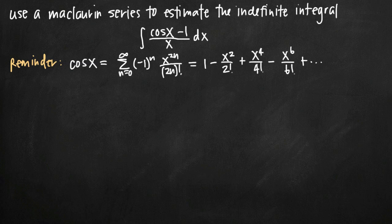Today we're going to be talking about how to use a Maclaurin series to estimate an indefinite integral. In this particular problem, we've been given the indefinite integral of cosine of x minus 1, divided by x. Instead of evaluating this integral directly with normal integration techniques, we've been asked to use a Maclaurin series to estimate the value of this indefinite integral.